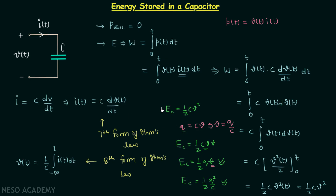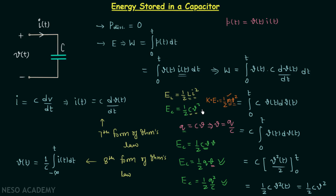Comparing this with the energy stored in an inductor, E_L = (1/2)·L·I², you will find that in place of L you have C and in place of I you have V. Mass is constant, just as L and C are constants, while velocity is variable — similarly, current and voltage are variable. So it is very easy to remember these two formulas if you know the formula for kinetic energy.